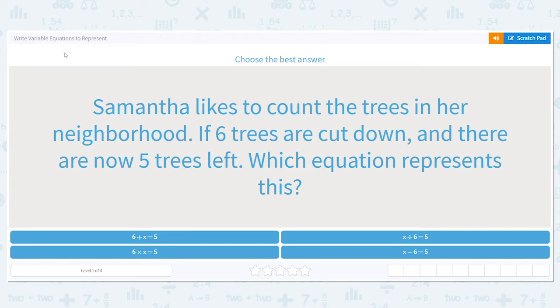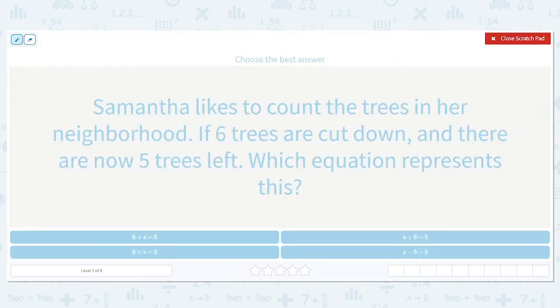Alright, let's write variable equations to represent. When we talk about variables, that's just a fancy way of saying a missing number. As you get older and into different types of math, instead of seeing a problem written like one times blank equals seven, or one times question mark equals seven, or one times fill in the square equals seven, you're going to start seeing variables. Variables are just any letter that are put there instead of a number.